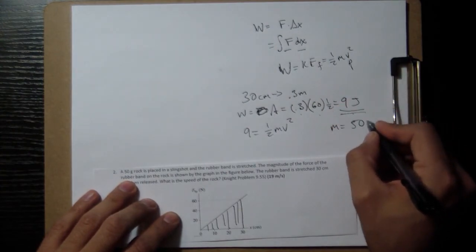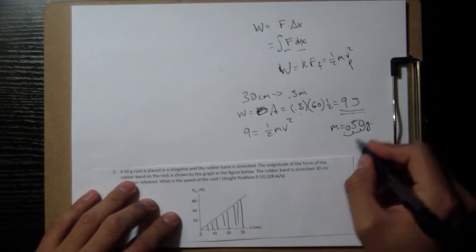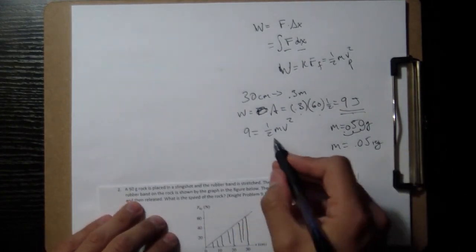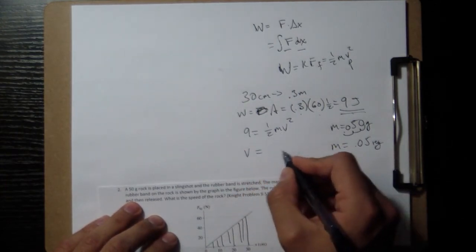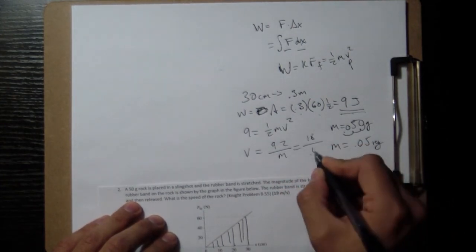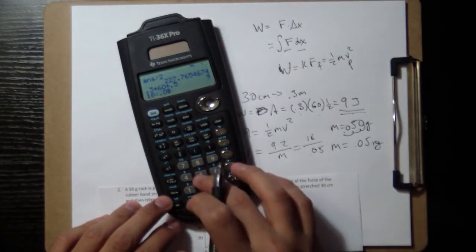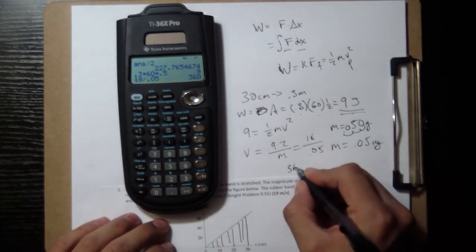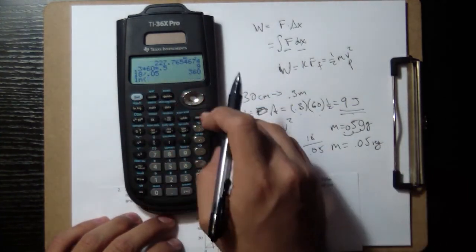If you have 50 grams, move it over 1, 2, 3, 0.05 kilograms. And if I want v by itself, then I will multiply by 2 and divide by m, so 9 times 2 divided by mass, 18 divided by 0.05, and that's v squared, so now we take a square root of that.